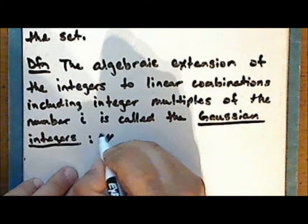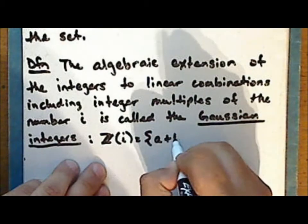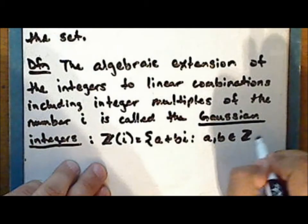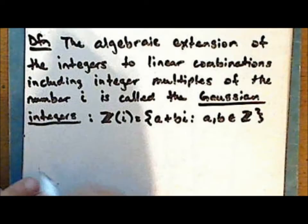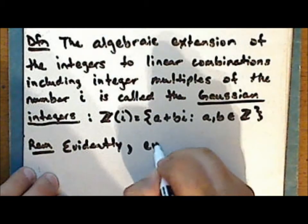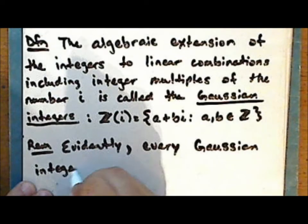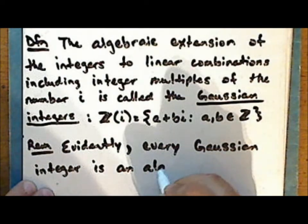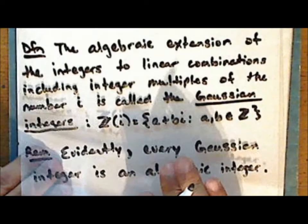An algebraic extension is similar to a vector space, and is an extension of a set to include linear combinations — or multiples — of a number not in the set. So the number alpha, being a linear combination that includes multiples of the number i, is an algebraic extension.